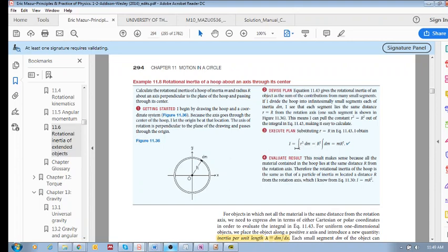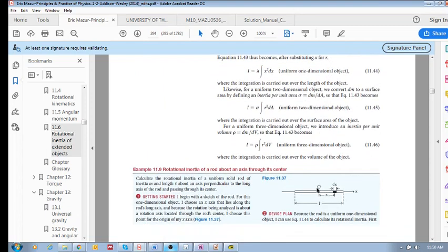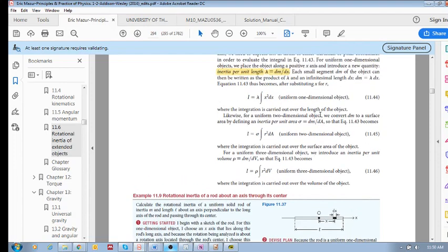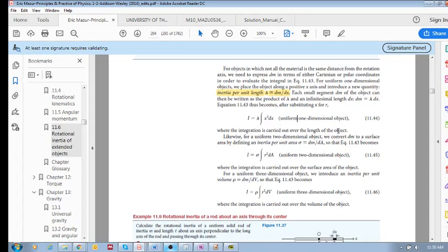outside of the integral and sum up all the dm's to get the result. But there are examples where your dm's—your mass segments or inertia segments—are not distributed all at the same radius from the center of rotation,